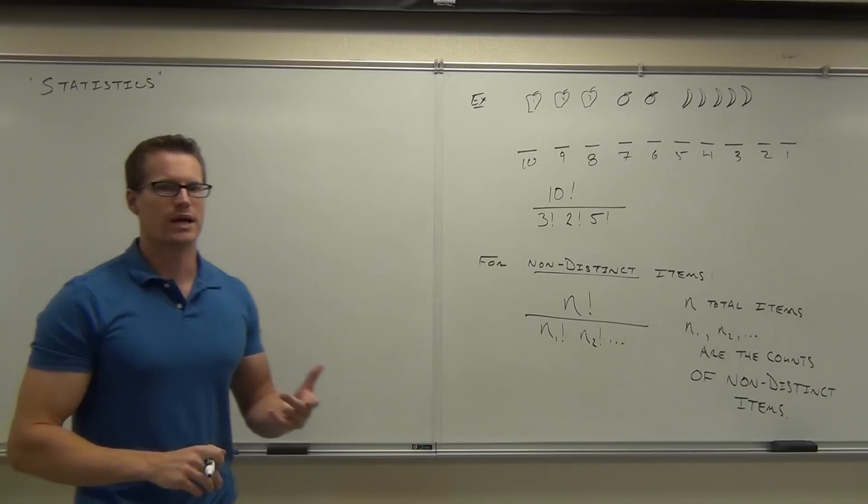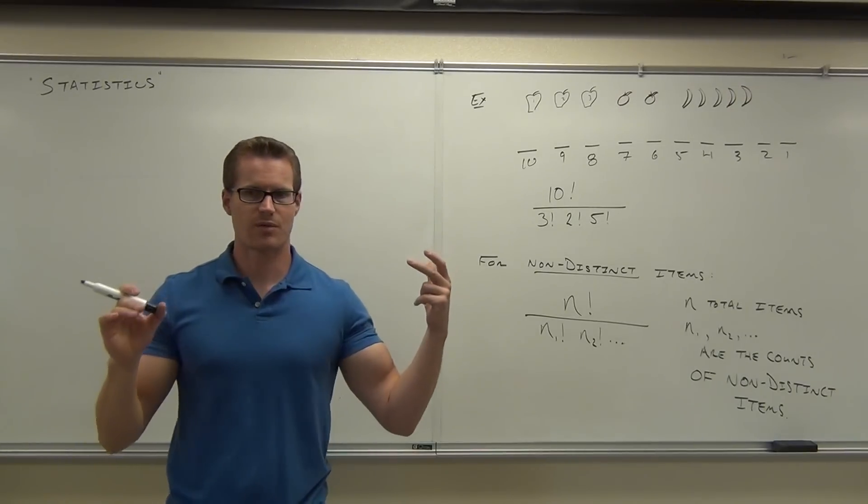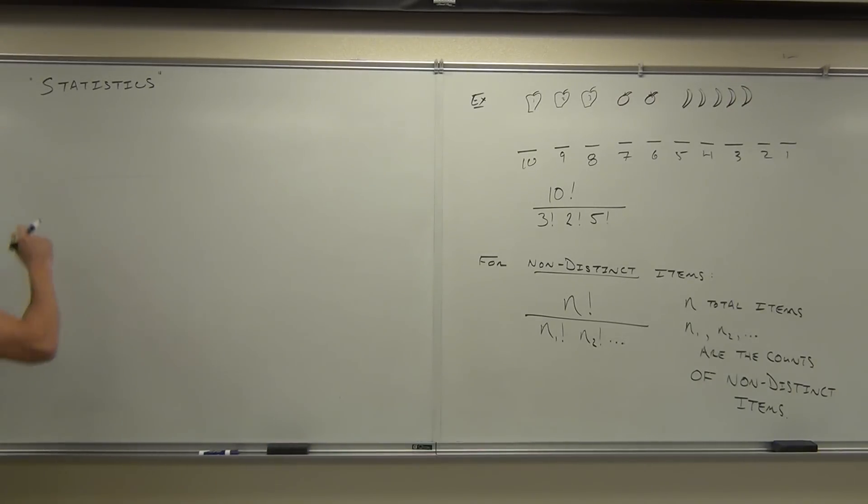What I want to know is how many ways could we arrange the letters to get different quote-unquote words? Now some of them aren't going to make sense at all, but how many ways could we arrange these letters?